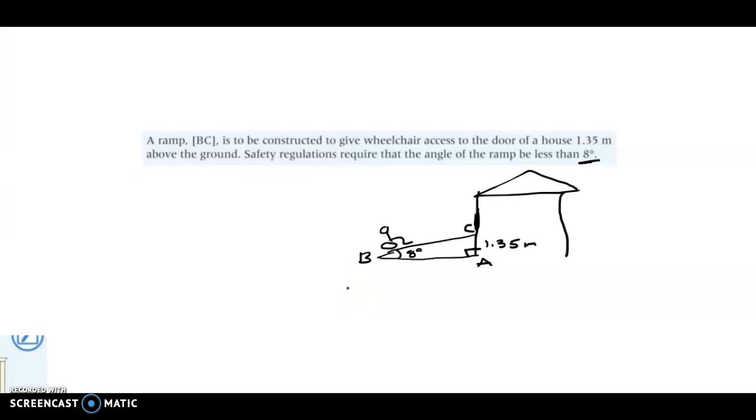So if I'm having to build this ramp, I want to know how long BC is. If I remember, we have our three trig identities, SOH CAH TOA. So this one needs opposite and hypotenuse, this one's adjacent and hypotenuse, and this one just needs opposite and adjacent. So if we have this angle and this is the length here, this is the opposite and this is the hypotenuse. So I need to use sine.